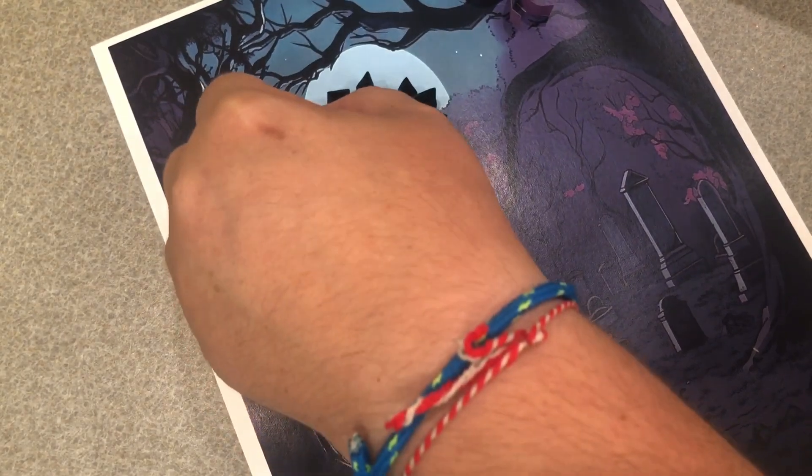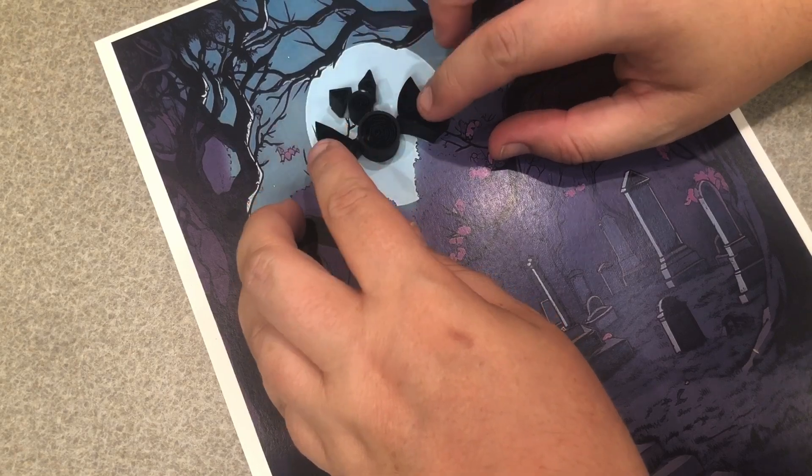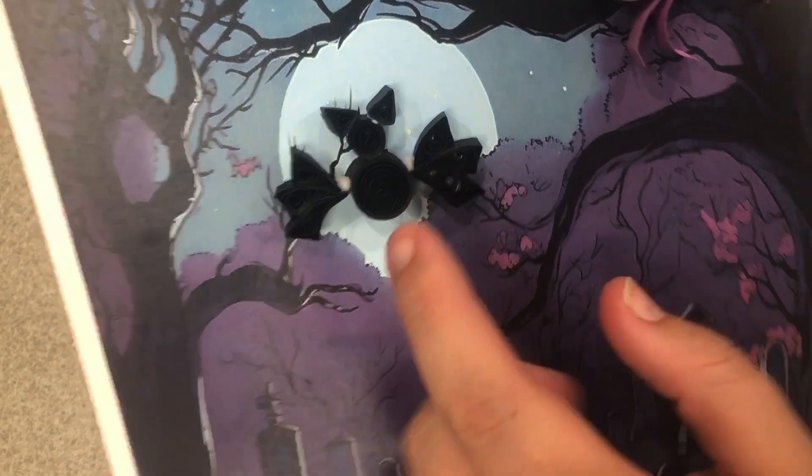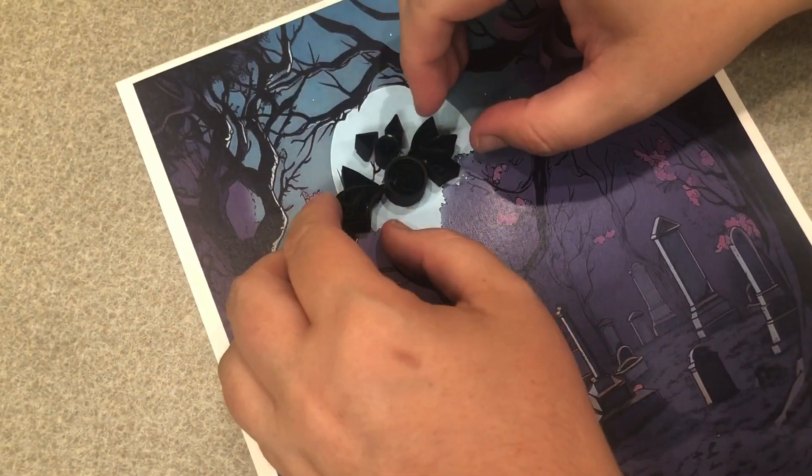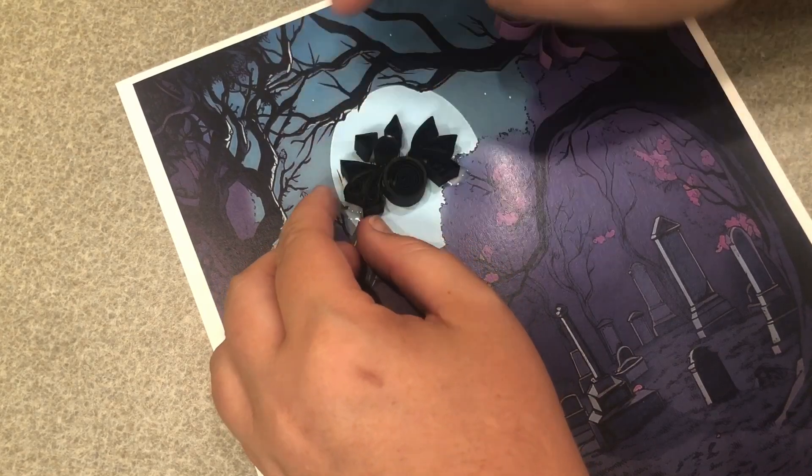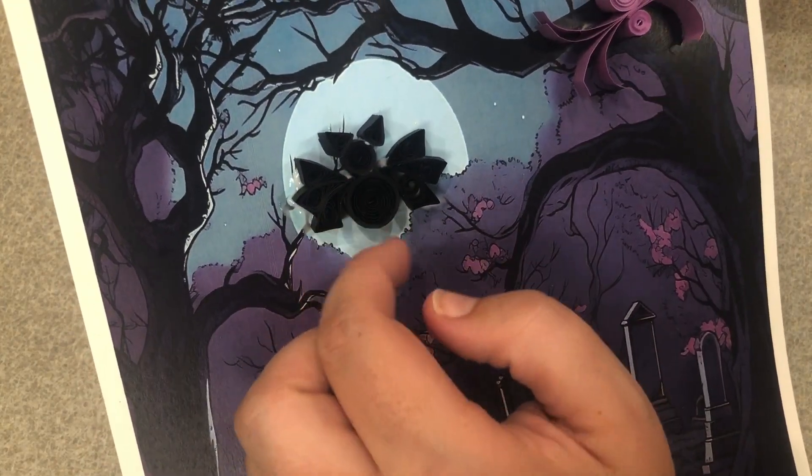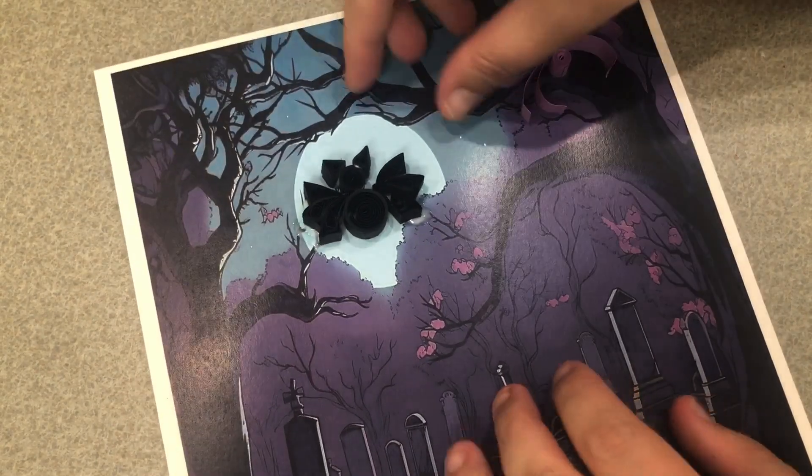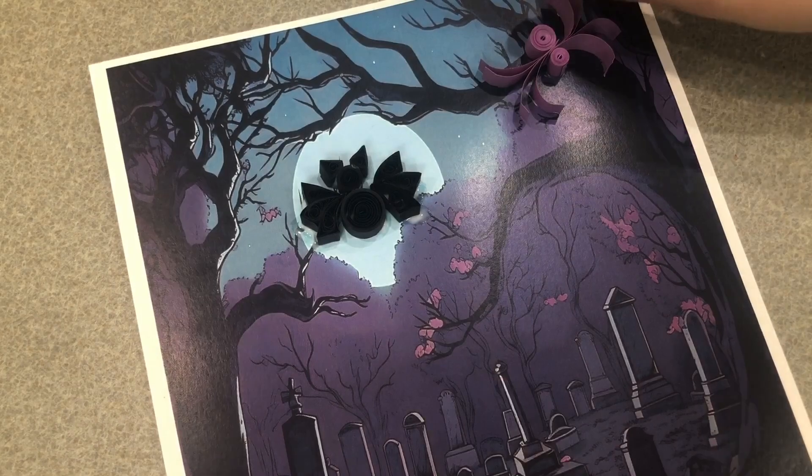And then attach it to our background. Now, you can have the wings so that they just touch the side of the body. Or you can move them up a little so that they touch closer to the neck. And the rounded edge kind of goes right around the body. So, whichever version you prefer for your little bat. And that's it.